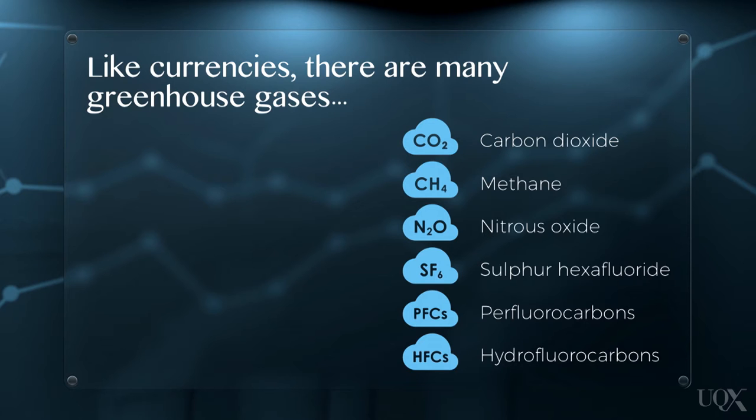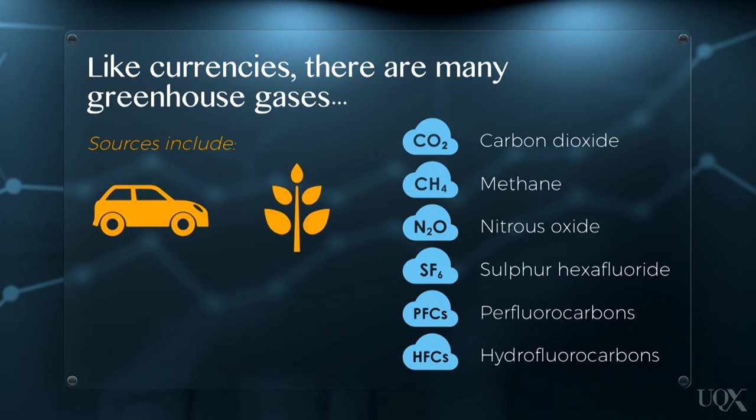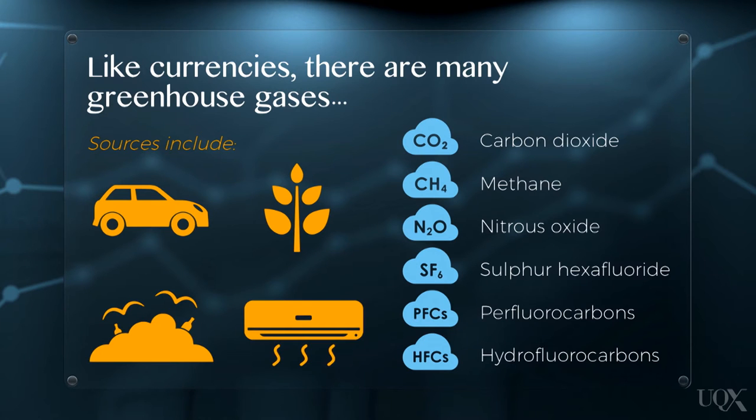Anthropogenic sources include fossil fuel combustion, for example in cars, agriculture, landfills, and air conditioners, among others.